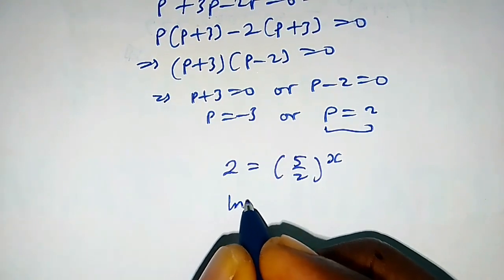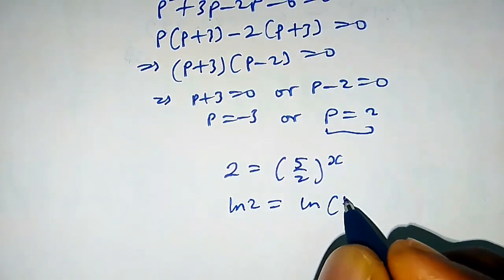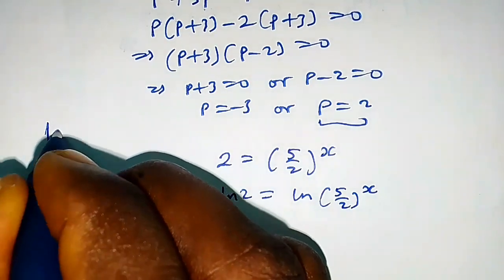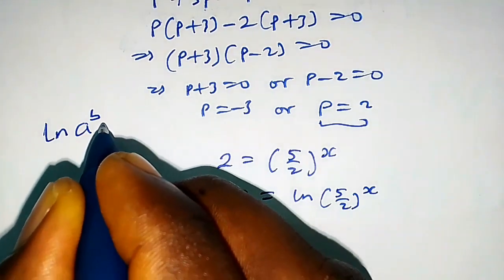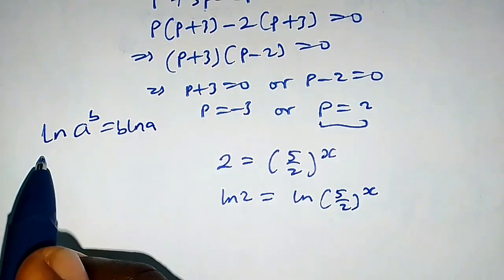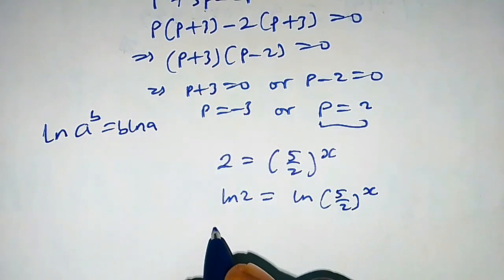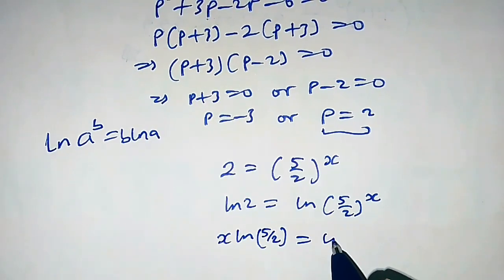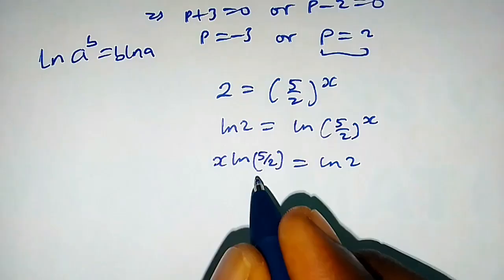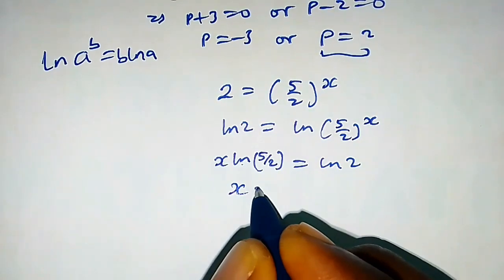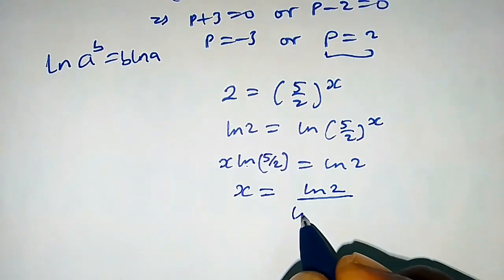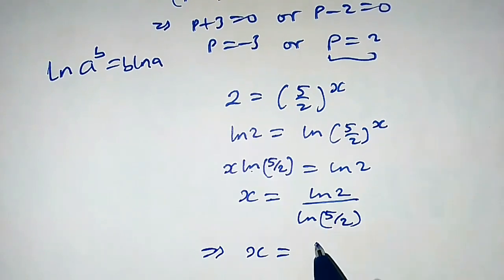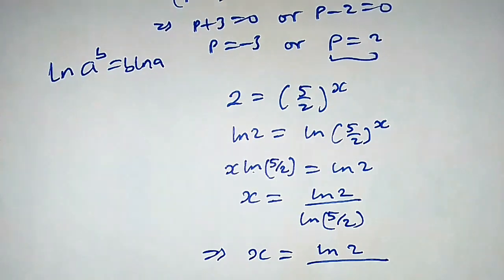Recall that whenever we have ln a raised to the power b, we can write it as b times ln a. Using this property, we get x times ln(5/2) equals ln 2. Dividing both sides by ln(5/2), we have x equals ln 2 over ln(5/2).